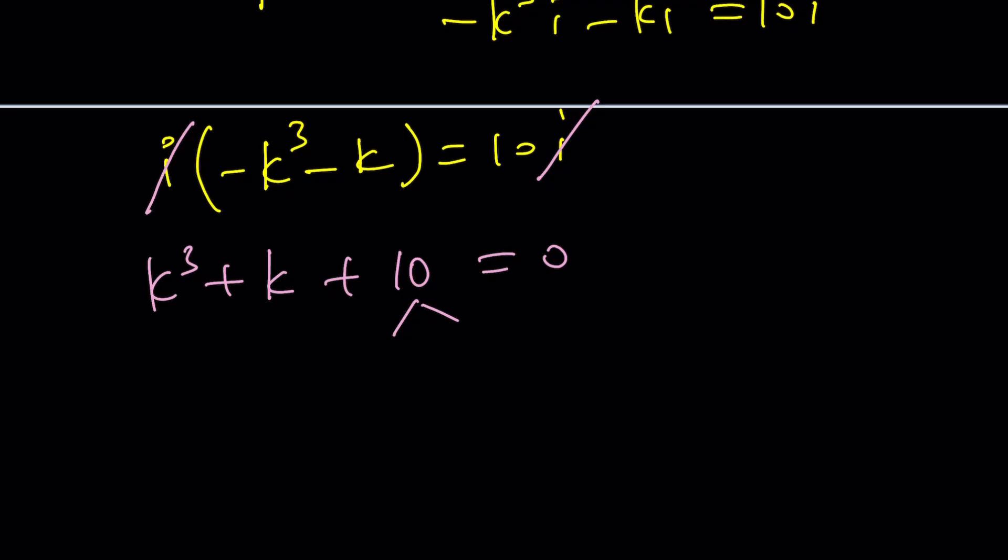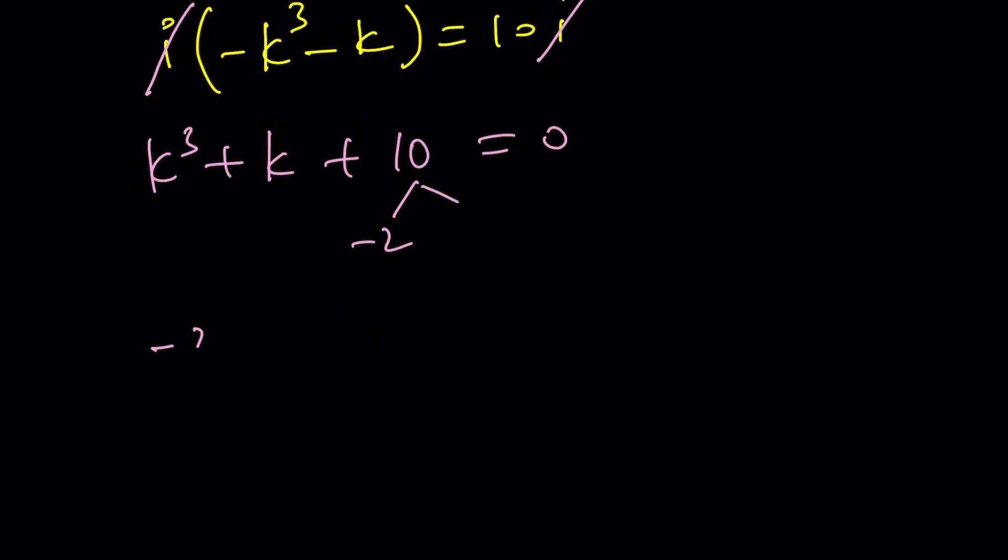-5 is too large. -2 is, I mean, -2 is too large. You know what I'm talking about. So why don't we try -2? (-2)³ + (-2) + 10. -8 - 2 + 10 = 0. Yeah, bingo. We got a solution. Beautiful. k = -2 works, which means z is equal to, what's z? ki.